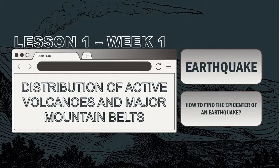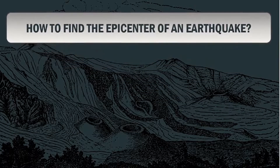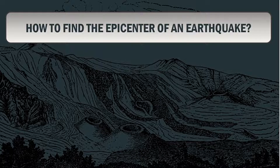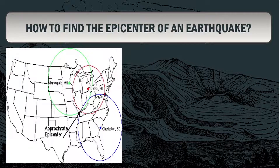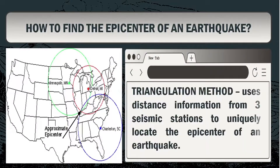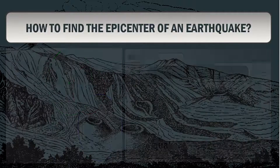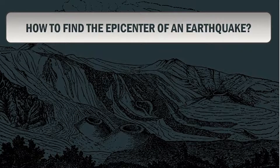Seismologists use the triangulation method to find the epicenter of an earthquake. When seismic data is collected from at least three different locations, it can be used to determine the epicenter by where the circles intersect. The triangulation method uses distance information from three seismic stations to uniquely locate the epicenter of an earthquake.